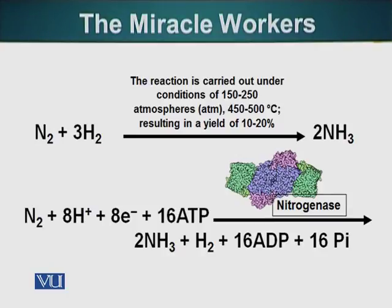Let's look at the conditions that are required to conduct this reaction. This reaction requires 500 degrees Celsius temperature and a pressure of 150 to 250 atmospheres. That's a huge amount of pressure, a huge amount of energy required to simply form ammonia from atmospheric nitrogen reacting with hydrogen.